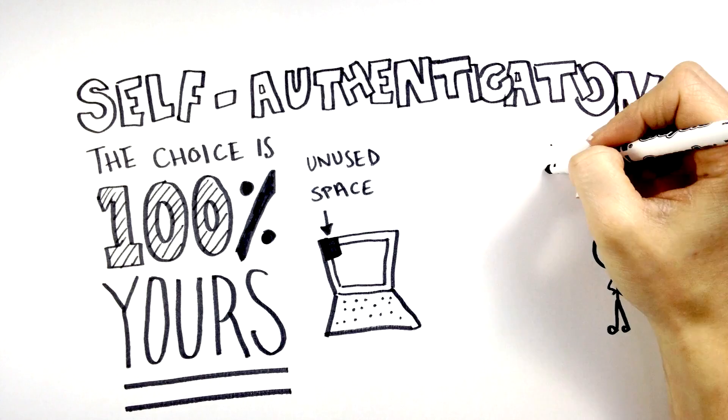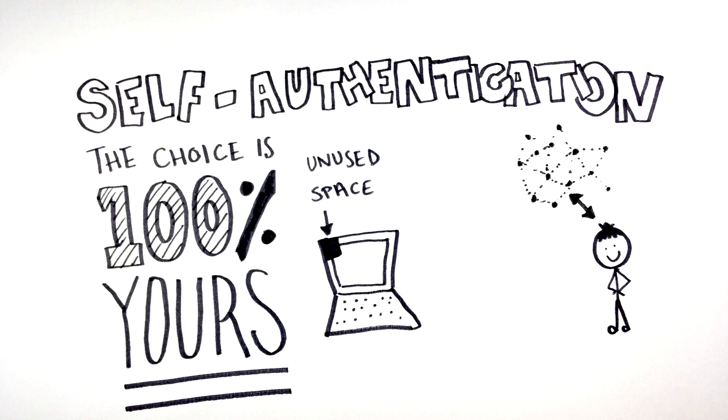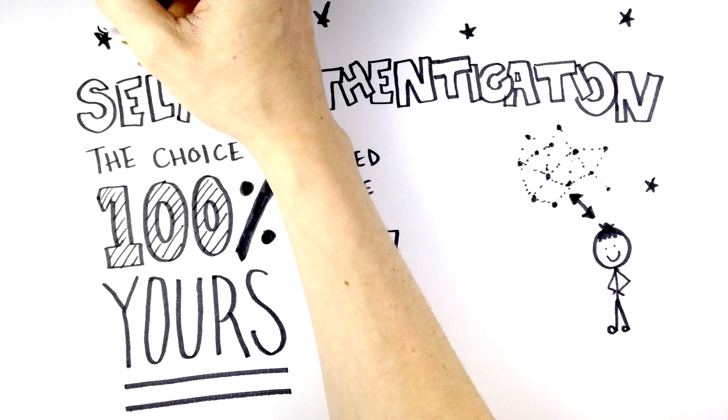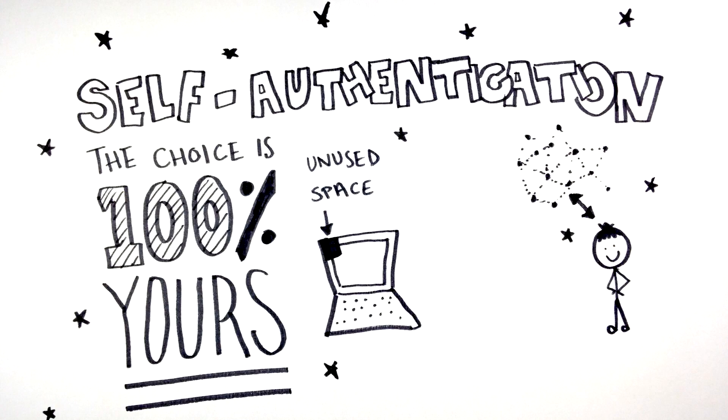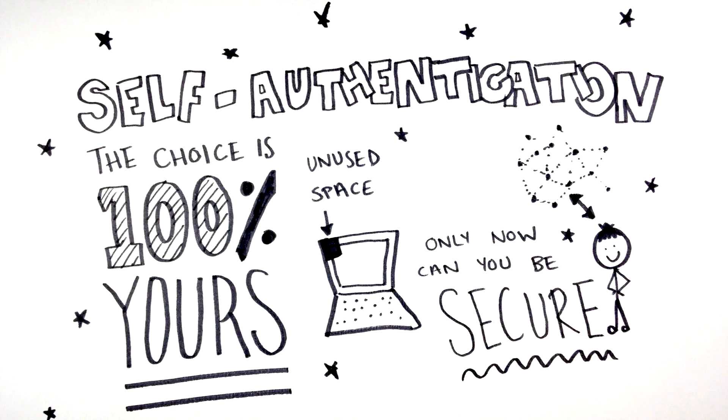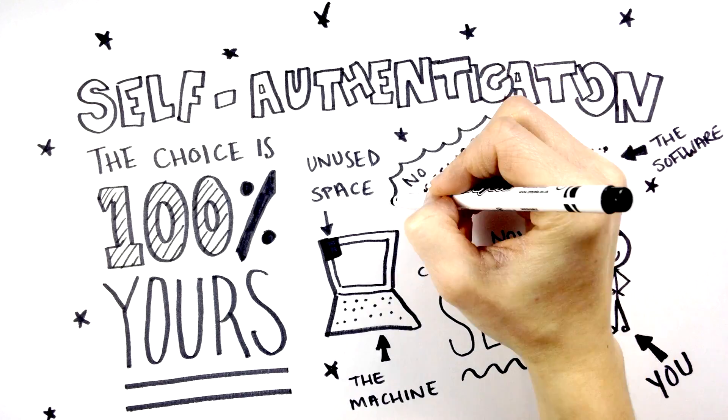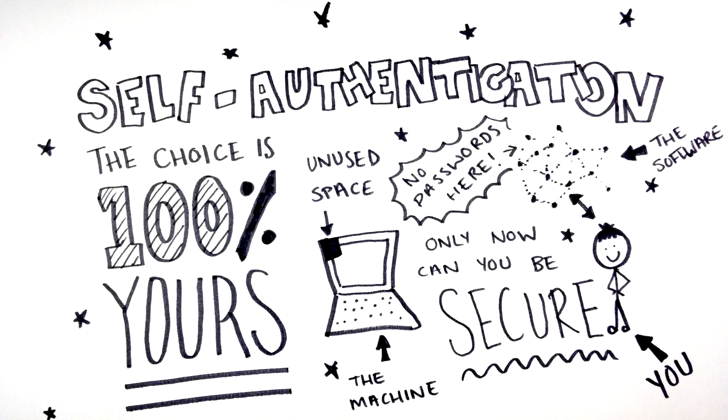Nothing else is required. The deal is between you as a person and the network. You are in complete control of your own destiny and required to ask nobody for any permission. Only now can you be secure. No third party was involved. Just you, the machine and the software. And at no time was your password transmitted on the network in any form whatsoever.